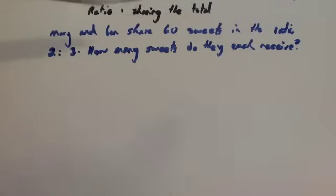Mary and Ben share 60 sweets in the ratio 2 to 3. That little dot means to, so 2 to 3. That means that Mary gets 2 parts and Ben gets 3 parts.